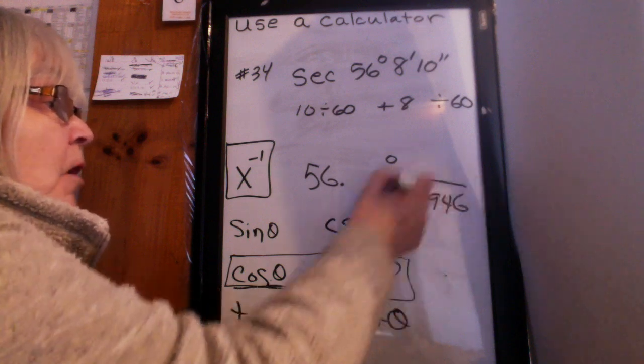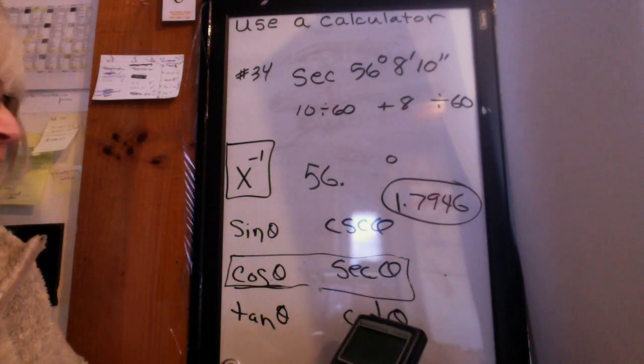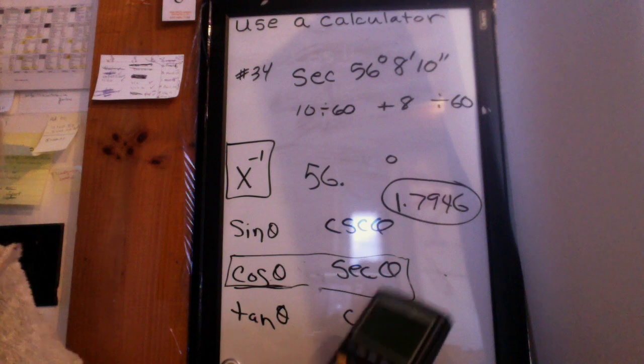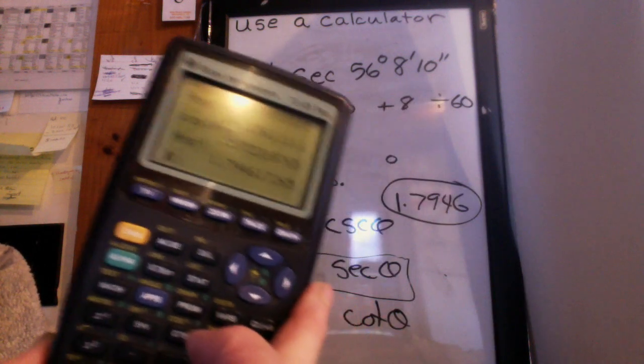And you should be able to get the final answer as 1.7946. And again, I'm always rounding to four decimal places. It was 7, 9, 4, 6, 1, 7, 2, 6, 5, if you want to check it on your own calculator.